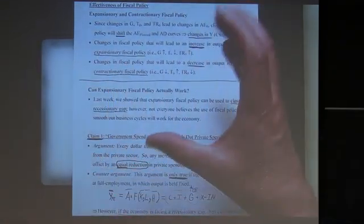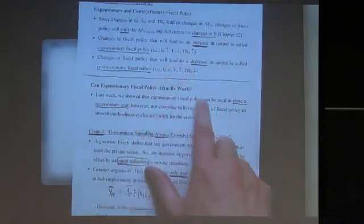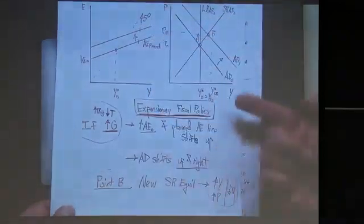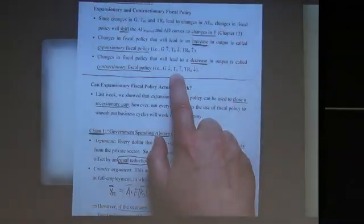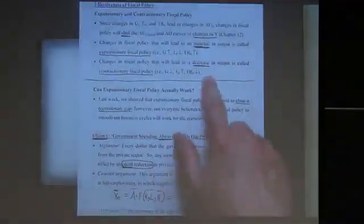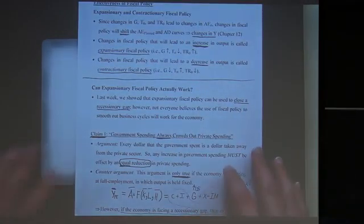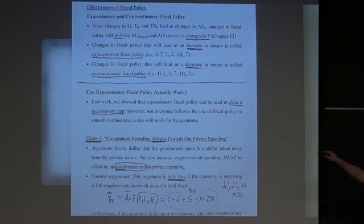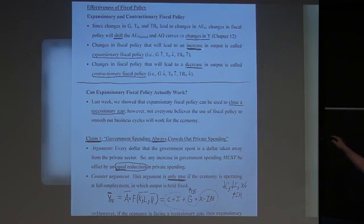Contractionary fiscal policy shrinks output by doing the opposite: cutting government spending on goods and services shifts the planned expenditure line down, shifts the AD curve down, and lowers Y. Tax increases or reductions in transfers do the same — shifting planned expenditure and AD down, decreasing output in the short run. Think of it like a gas pedal or brakes on an automobile.